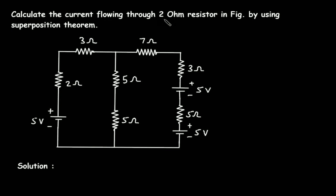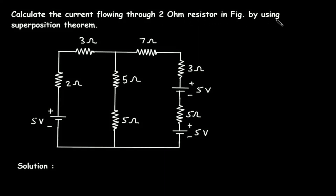Calculate the current flowing through the 2 Ohm resistor in the figure by using the superposition theorem. We have to find the current flowing through this 2 Ohm resistor using superposition theorem.